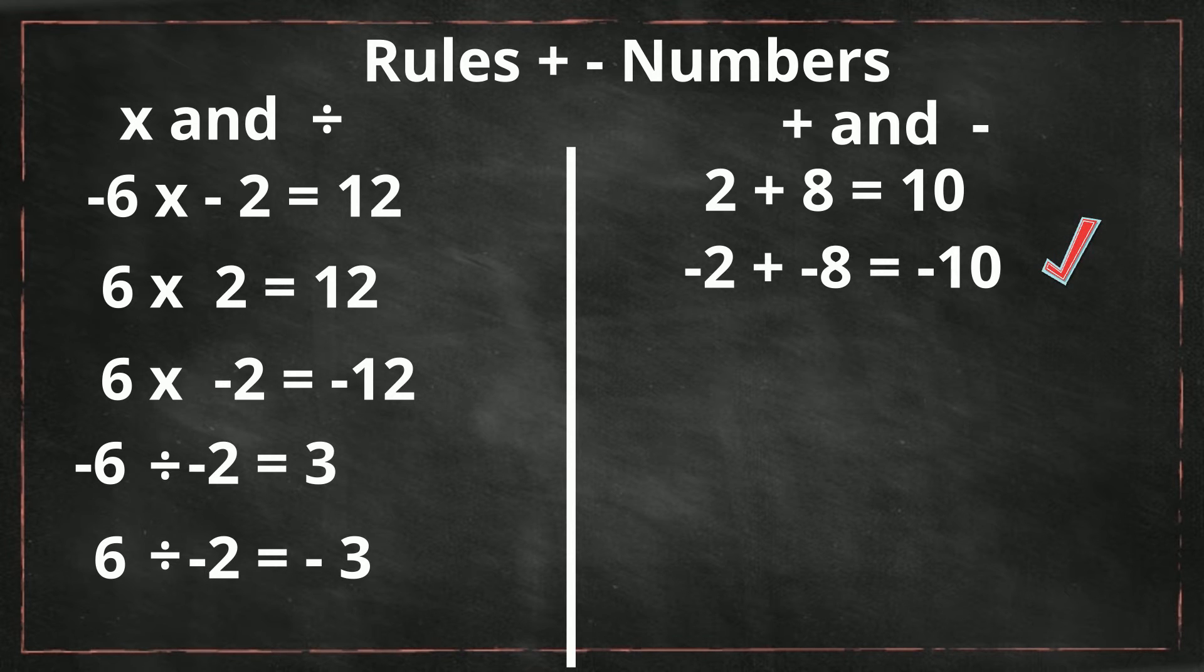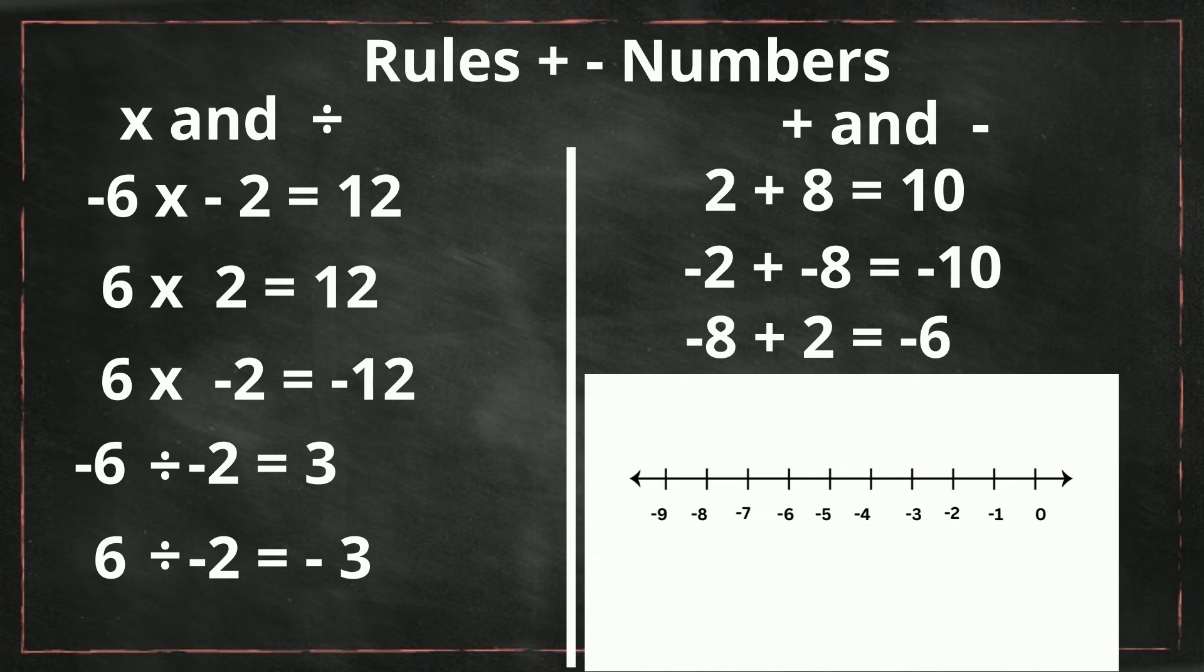Now, what do we do with this? We have a negative 8 plus 2. There are different signs. 8 is larger than 2, so it's going to be a negative. But in this case, instead of adding, you're actually subtracting. So think of it like this. If you see negative 8 on the number line, it's to the left, and you're moving it two places to the right because you're adding two positive numbers to it. So it will become negative 6.